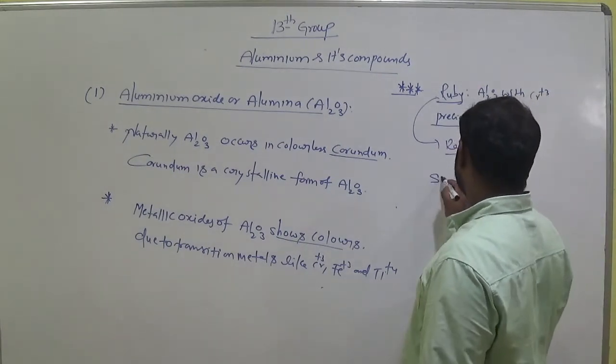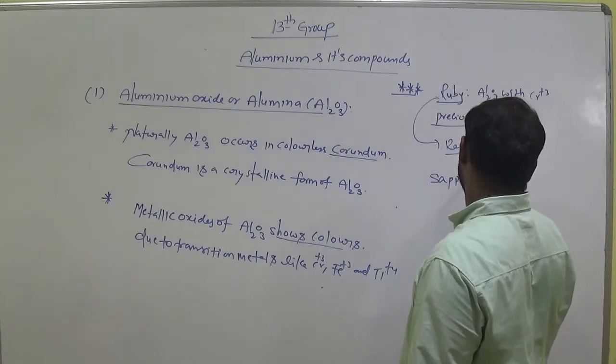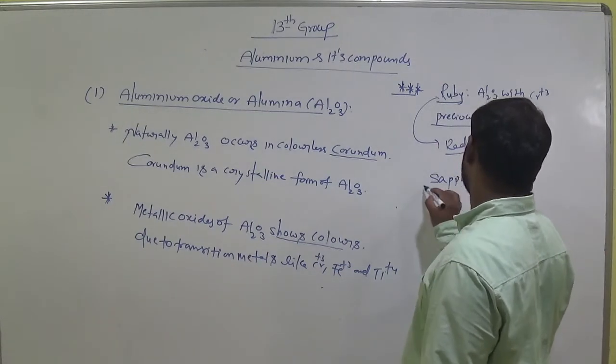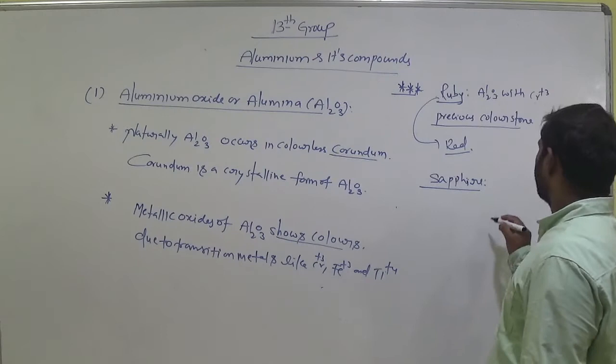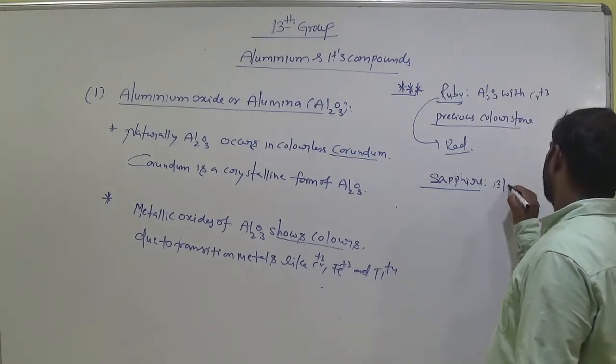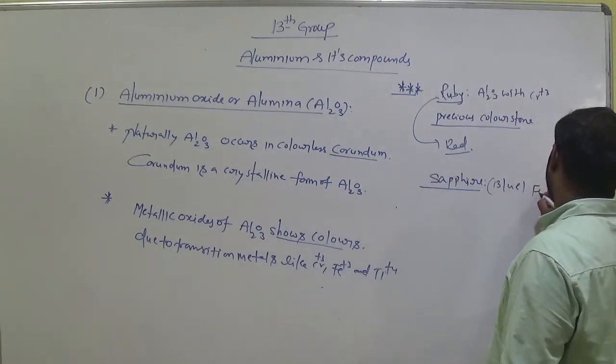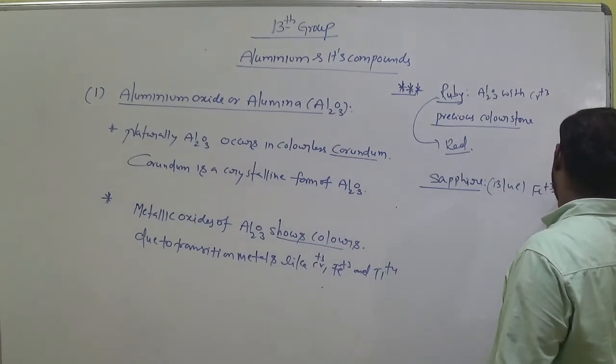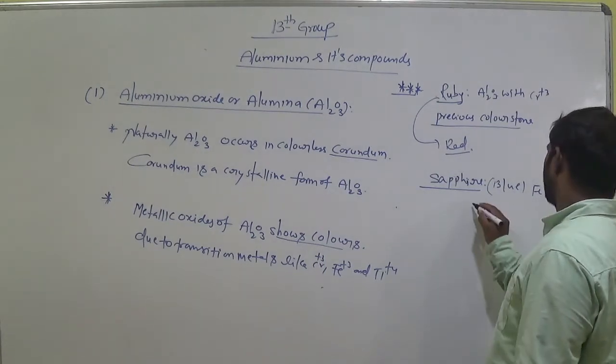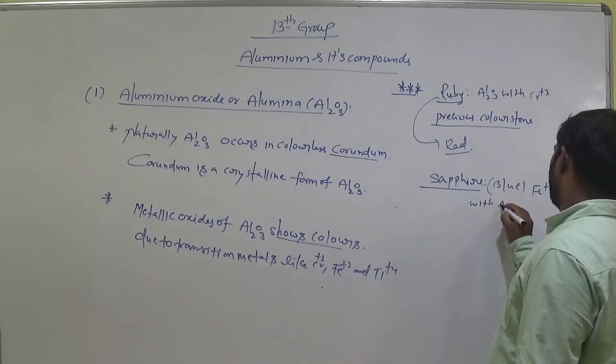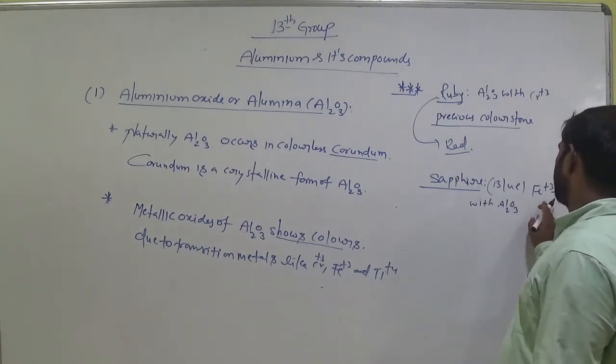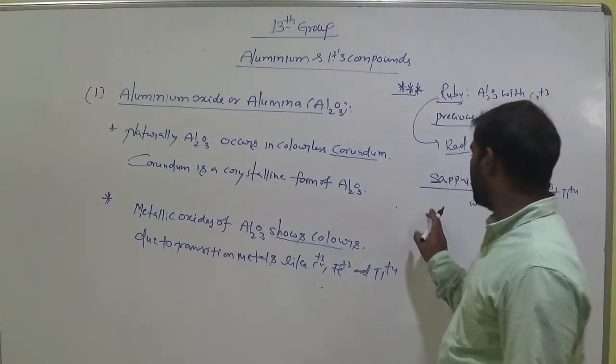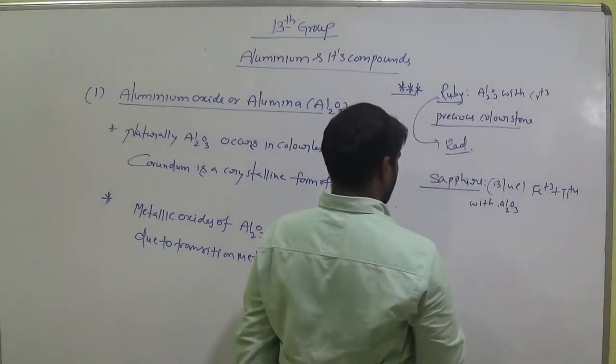Next precious stone Sapphire. It is blue color. It is Fe³⁺ and Titanium⁴⁺ with Aluminium. Due to these transition metal ions with Aluminium, it gives blue color.